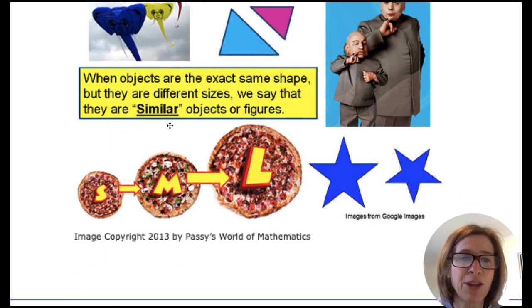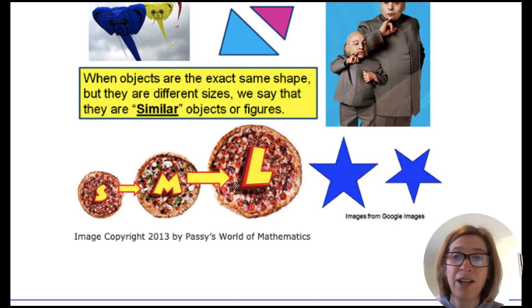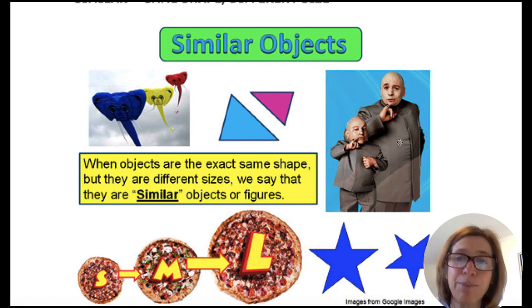You probably never thought about it, but like a pizza, that circle, the small, the medium, and the large, they're proportional. Mini-me, proportional. Triangles, proportional. Kites, proportional.